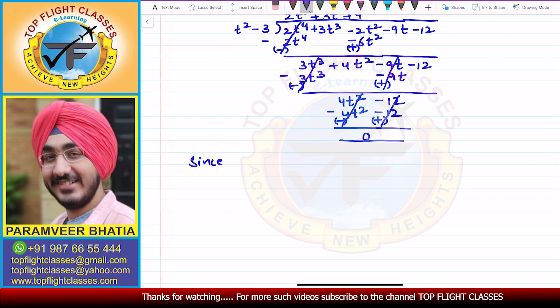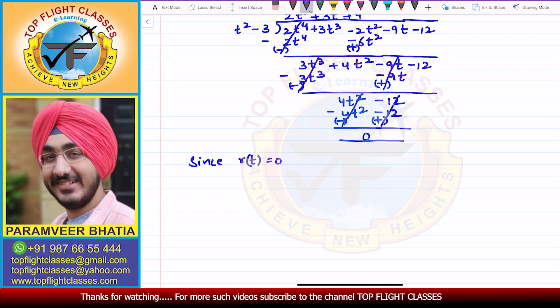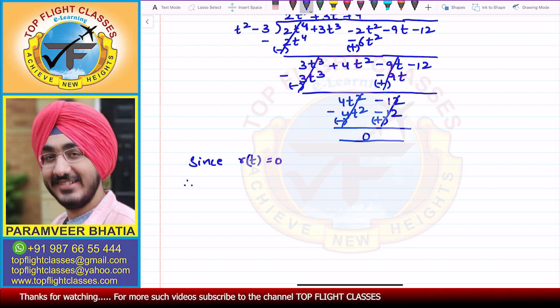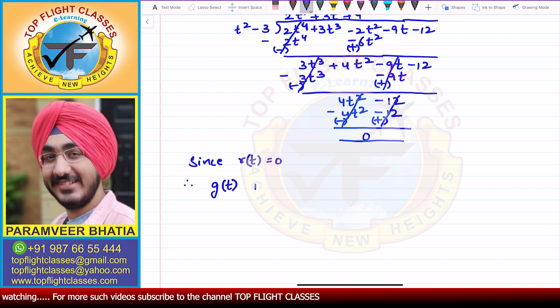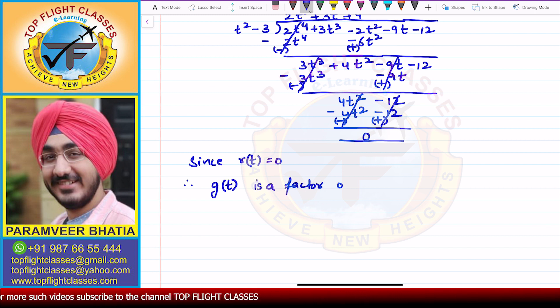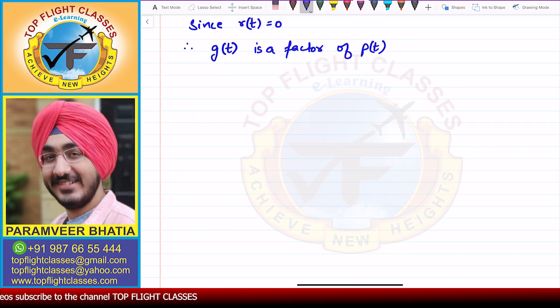Since R = 0, therefore G is a factor of P.